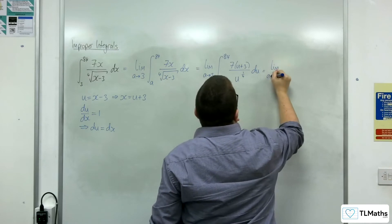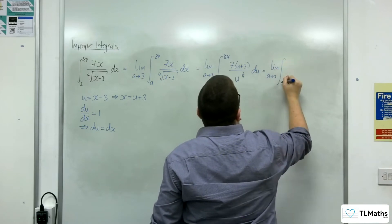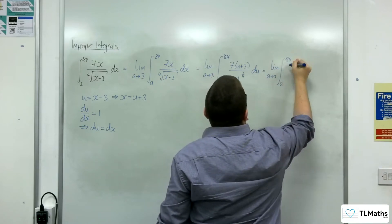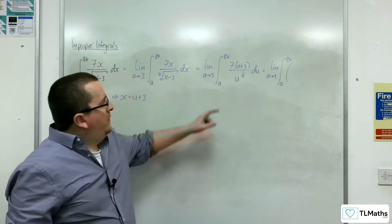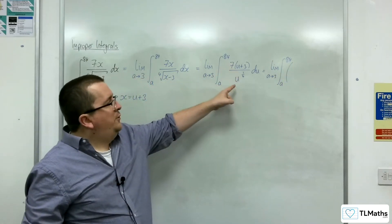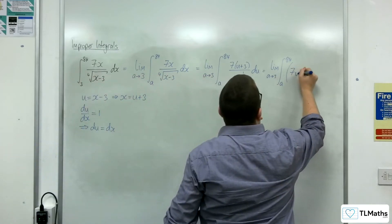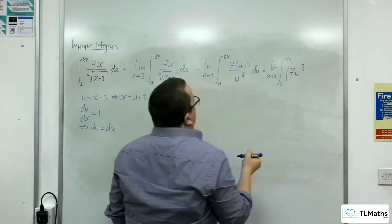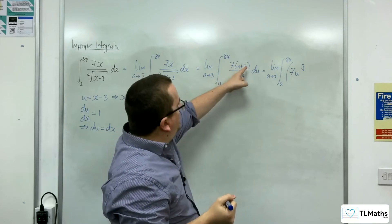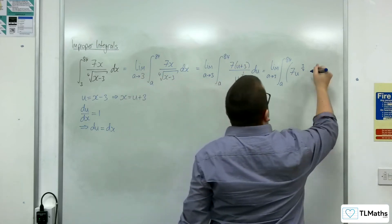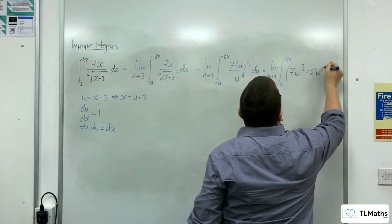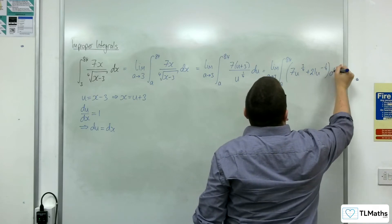Right. So let's simplify that fraction before we integrate. We've got 7u over u to the quarter, which is going to be 7u to the 3 quarters. And then we've got 7 lots of 3, so 21 over u to the quarter, so that's plus 21u to the minus a quarter du.